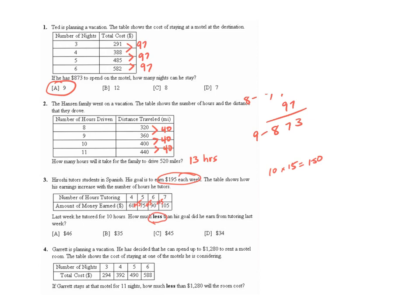But the question says how much less than his goal? So we need to do $195 the goal, subtract $150, and we get $45 less than his goal, C.